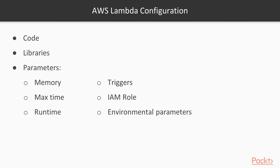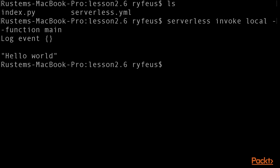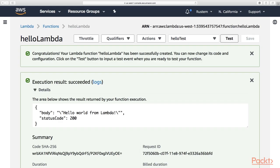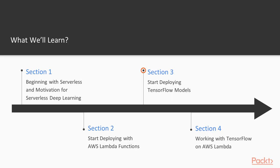We will also look into the data science process and how serverless can enable an easy and convenient way to deploy deep learning applications. Next, we will make a deep dive into AWS Lambda and learn how it works, different ways of Lambda deployment, and what you have to keep in mind when developing applications for AWS Lambda.